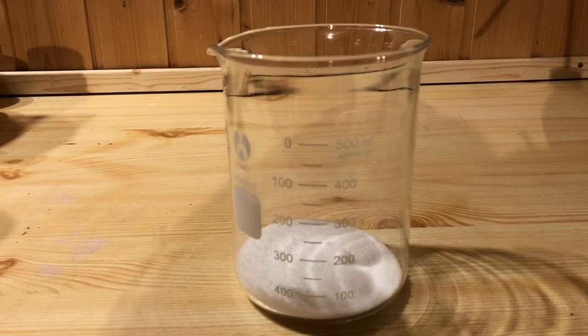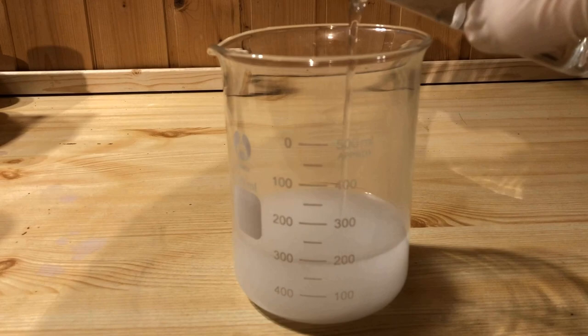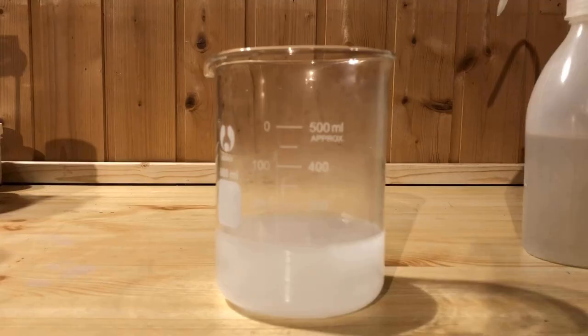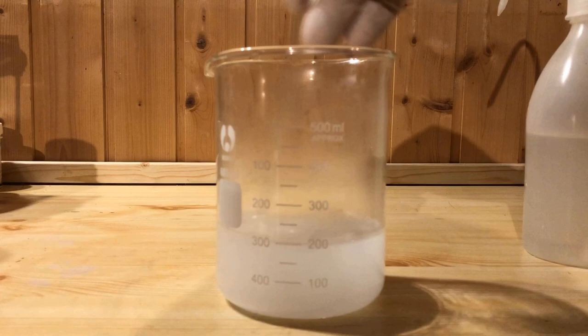A beaker containing 64 grams of sodium hydroxide is filled up to the 200 milliliters mark with distilled water. Stir with the glass rod until the sodium hydroxide is completely dissolved. The solution becomes very hot and is very corrosive.